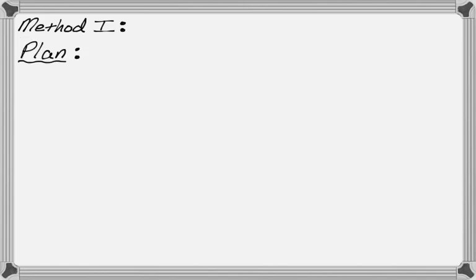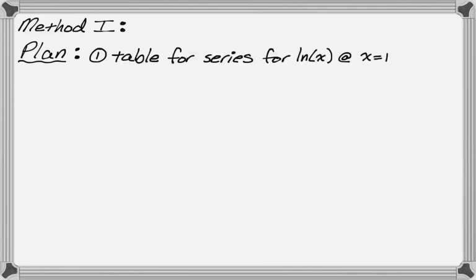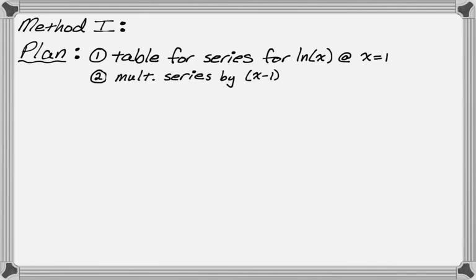The first method I'm going to use: I'm going to first focus on the natural log of x, and I'll make a series for that by using the table method, where I find a pattern for the nth derivative evaluated at 1, write out the series, and see if I can write a summation. Then after I have that series, I'm going to multiply it by the quantity (x minus 1).